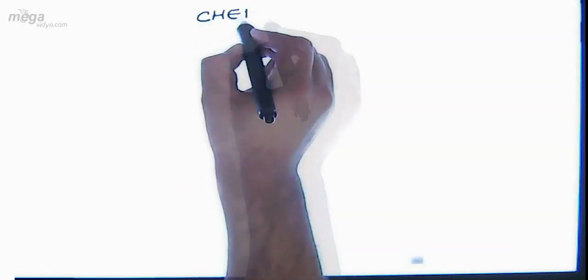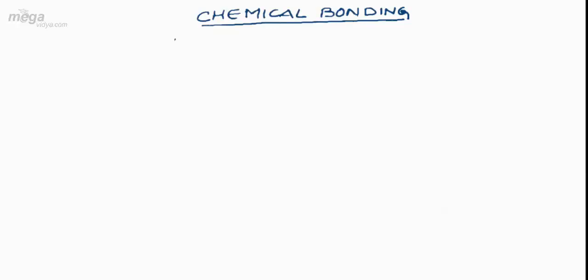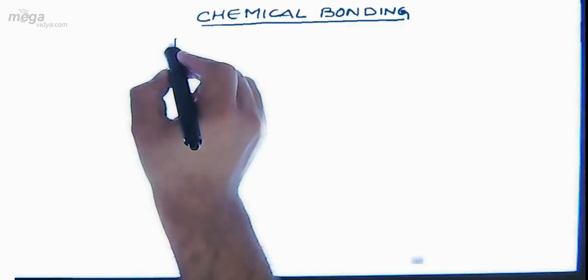Let's begin a chapter on Chemical Bonding. Firstly, I would like to make you aware about the significance of chemical bonding in chemistry. Whether we talk of physical chemistry, organic chemistry, or inorganic chemistry, we deal with chemical reactions, and a chemical reaction involves the association and dissociation of bonds. So in chemistry, chemical bonding has a vital role.